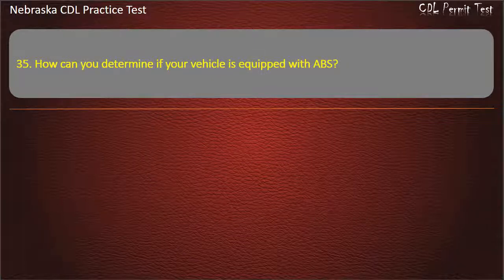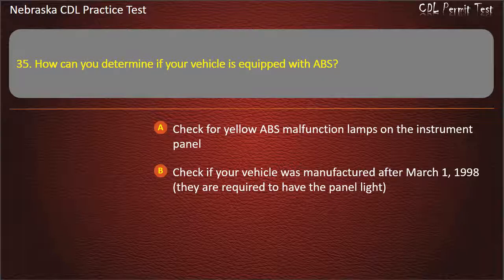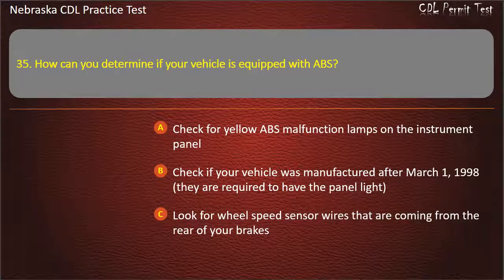Question 35. How can you determine if your vehicle is equipped with ABS? Check for yellow ABS malfunction lamps on the instrument panel; check if your vehicle was manufactured after March 1, 1998 — they are required to have the panel light; look for wheel speed sensor wires coming from the rear of your brakes; all of the above. Answer: All of the above.